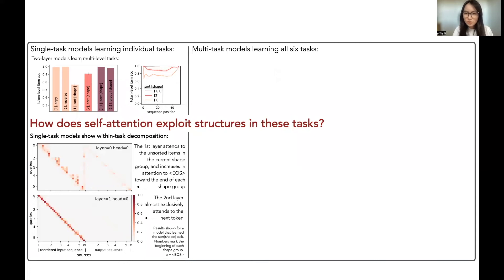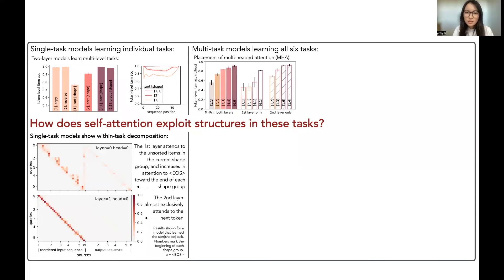So what about when a model learns multiple tasks? This figure shows the generalization accuracy for models with different attention heads across two layers. The model needs multi-headed attention to effectively learn all tasks, but placing multi-headed attention in the second layer is the most effective.